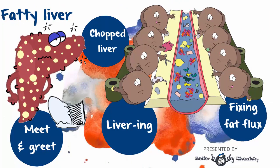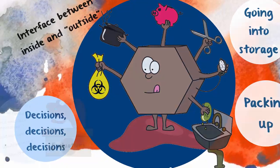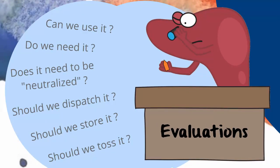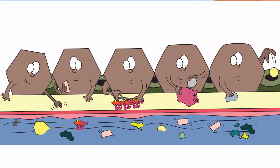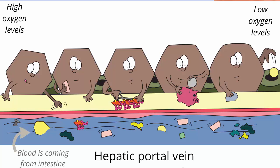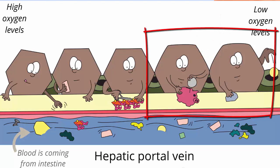So what's going on? Liver cells work hard. They're the hub that connects the inside of the body with the outside. Their job is to sort through the blood that arrives from the intestine and decide what to do with all those goodies — do we need it, should we dispatch it, should we keep it, should we toss it, does it need to be neutralized? The process of evaluating happens in the liver sinusoids. The hepatocytes are lined up behind the blood vessels, which receive blood from the hepatic artery and the hepatic portal vein. Each liver cell can pretty much do anything, but where they find themselves in the line determines what they actually do. Cells at the start of the line are more concerned with clearing; cells at the end focus on storing.